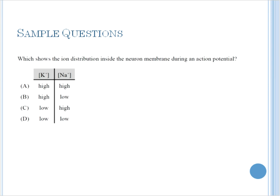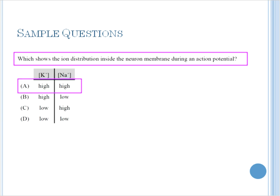But we have some example questions from previous public examinations. We have the following: Which shows the ion distribution inside the neuron membrane during an action potential? In other words, during stimulation. Remember, at rest, potassium is high inside, sodium is high outside. However, when depolarization occurs, the potassium gates are closed, and sodium rushes in. The correct answer then would be A. During the action potential, during the stimulation, during the depolarization event, sodium becomes high inside. This is what accounts for the temporary positive charge.